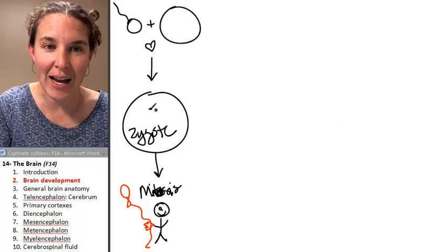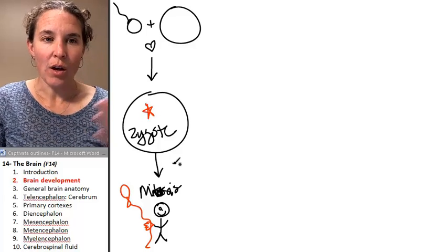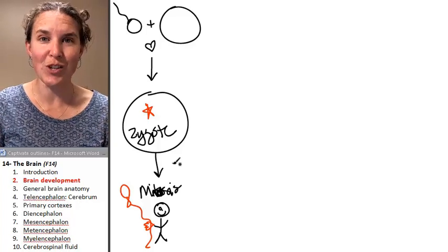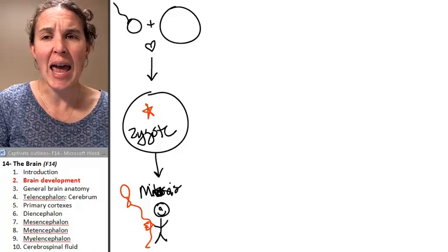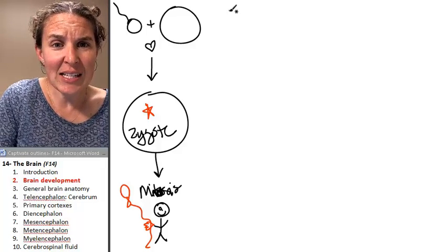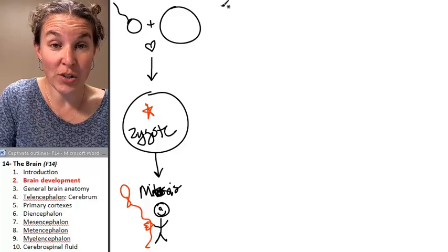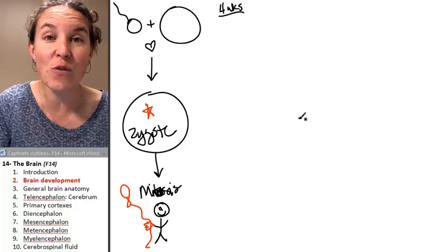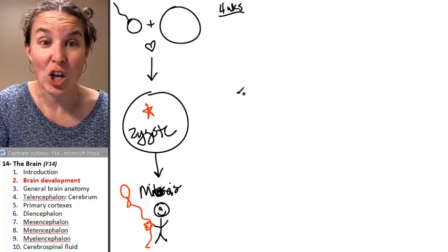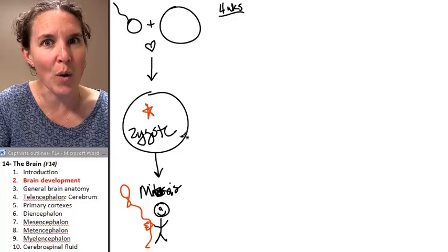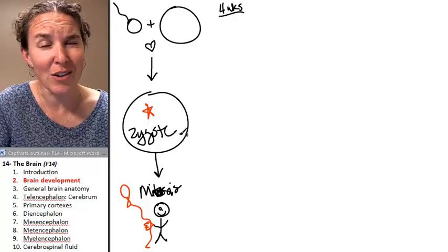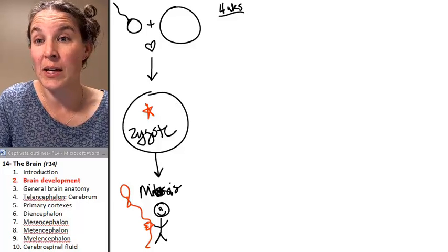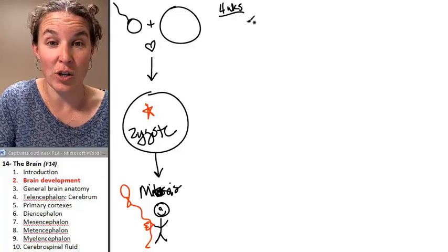We're going to look at how that zygote specifically divided to form your central nervous system. And the crazy thing is that this all started at about four weeks in utero. This is four weeks in your mama's belly. You're not even out yet, and you already are forming some brain structures.